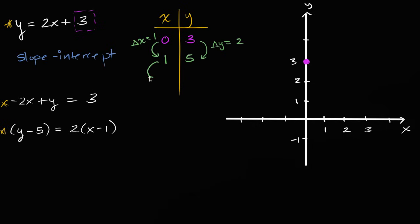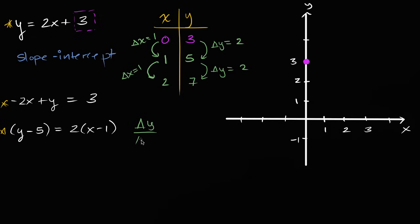Let's do that again. Let's increase our x by one. Change in x is equal to one. We're going to go from x equals one to x equals two. What's our corresponding change in y? When x is equal to two, two times two is four, plus three is seven. Our change in y is equal to two — y went from five to seven. So for every one that we increase x, y is increasing by two. For this linear equation, our change in y over change in x is always going to be two. So our slope is equal to two.